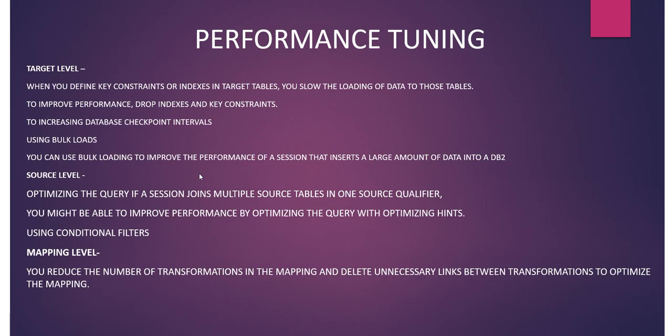At the target level, you can check if any key or constraint is defined — for example, indexes, primary keys, or foreign keys — as these will slow performance. To improve performance, you can drop the indexes and key constraints. You can also check checkpoint intervals and use bulk loads. In bulk load, data is loaded all at once, whereas in normal load, data is loaded one by one.